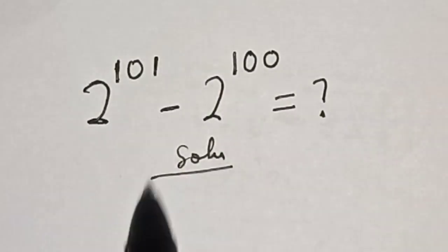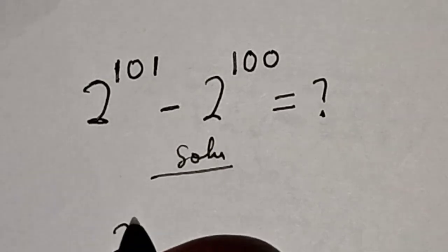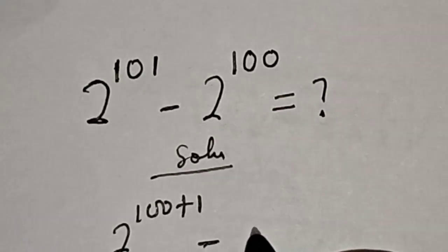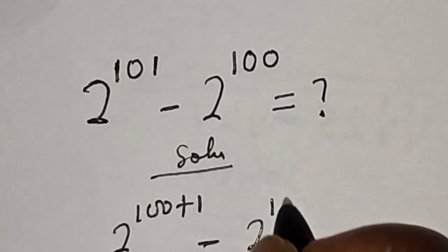We have 2 raised to power 101, which can be written as 2 raised to power 100 plus 1, minus 2 raised to power 100.